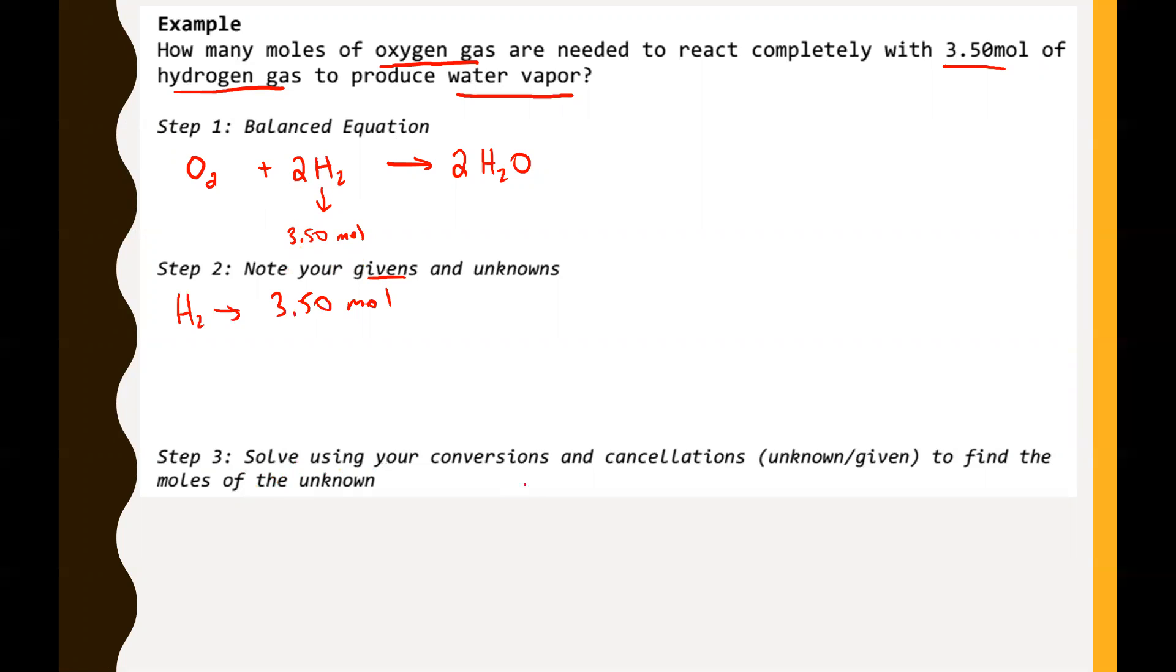Step three, solve using your conversions and cancellations. You have this many moles of H2. Notice you have two parts of H2. So 3.50 moles is equal to what we would call two parts.